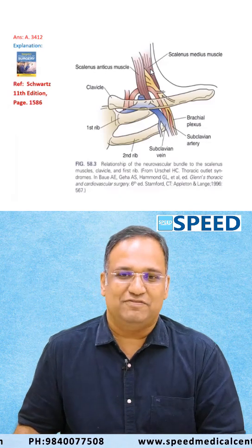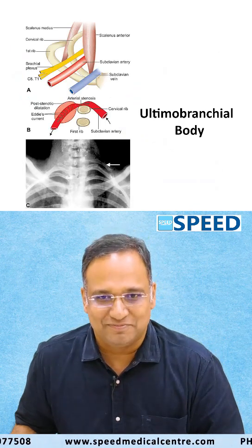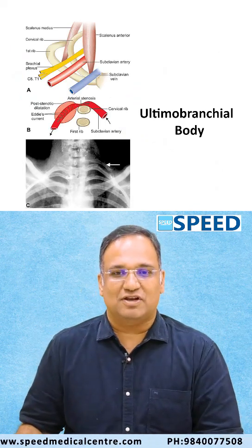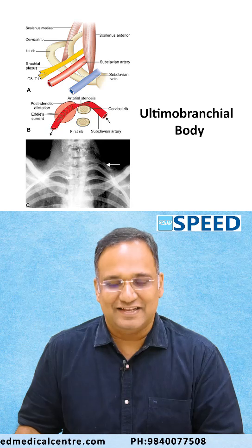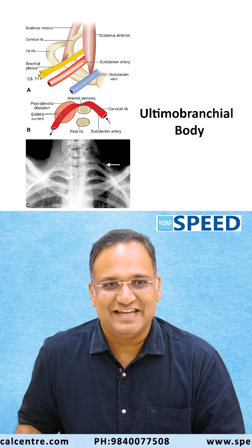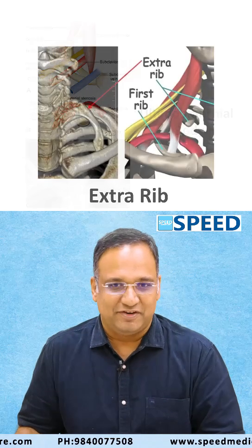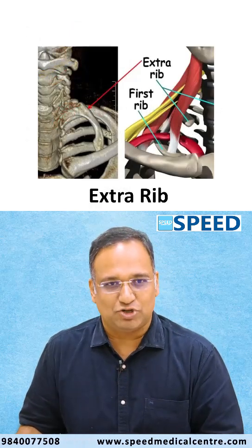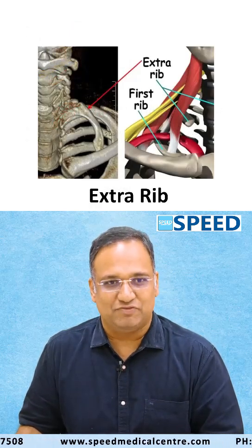One of the most common differential diagnoses is the cervical rib. The most commonly affected nerve roots are C8 and T1. The treatment of choice for cervical rib is extraperiosteal excision of the rib.